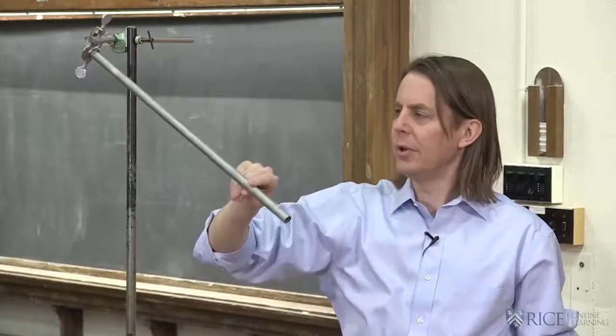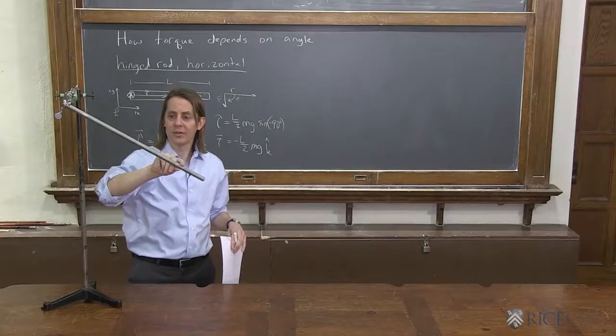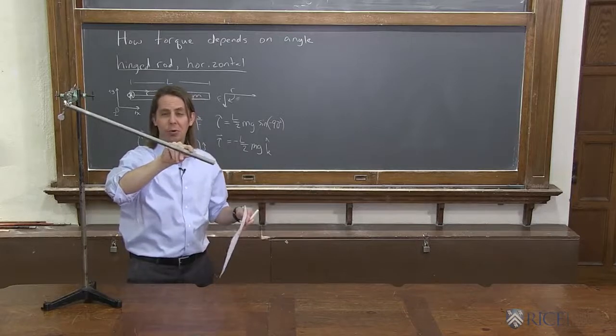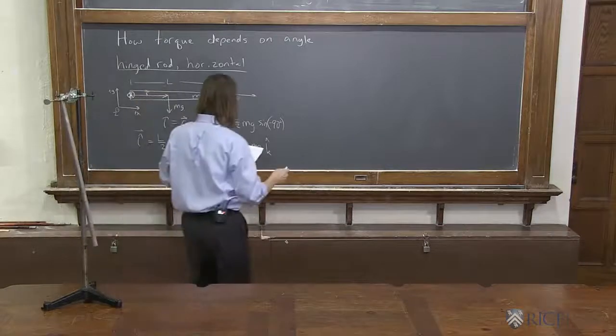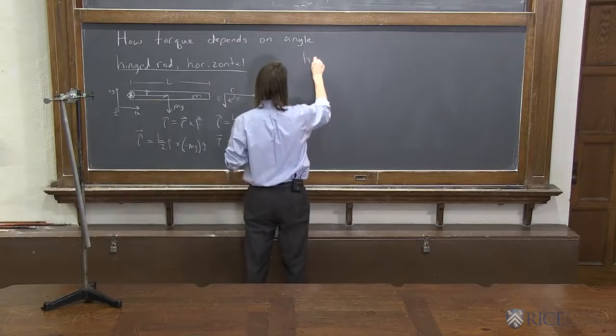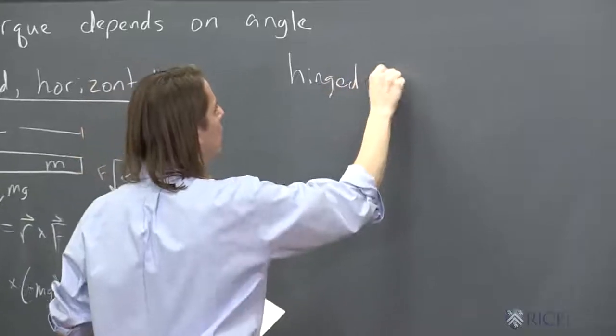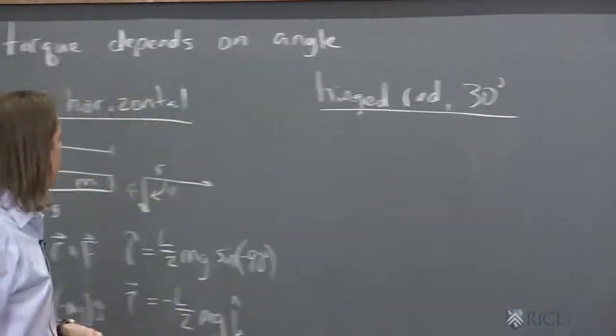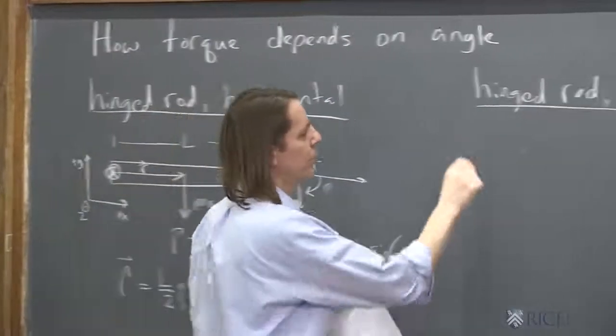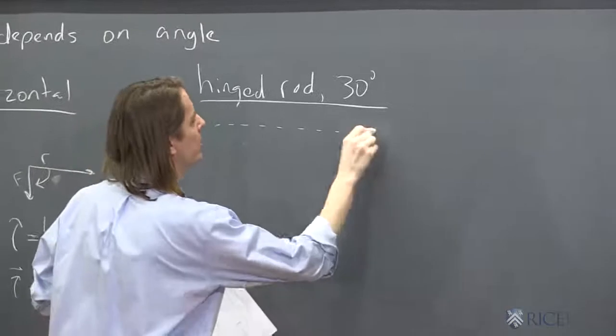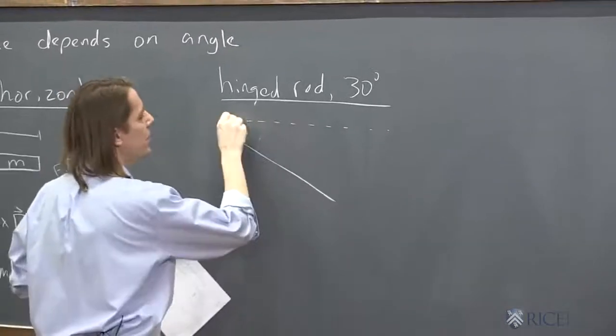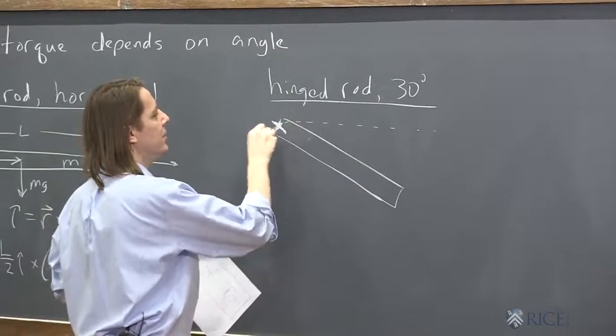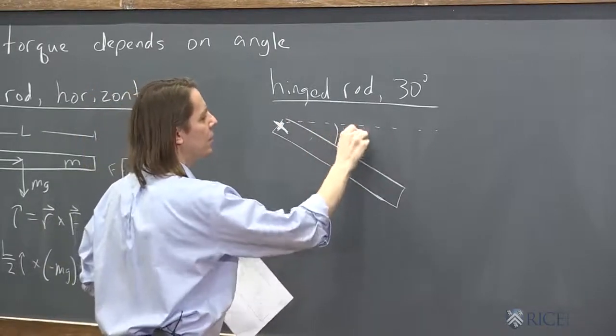Now we're going to do a case in between. Now we're going to do a case like this. At some angle, let's do 30 degrees between the horizontal and the rod. So let's do hinged rod 30 degrees. So now I'm going to draw it where here's the horizontal. And here is the rod. And it's hinged up here at this end. And that's 30 degrees.